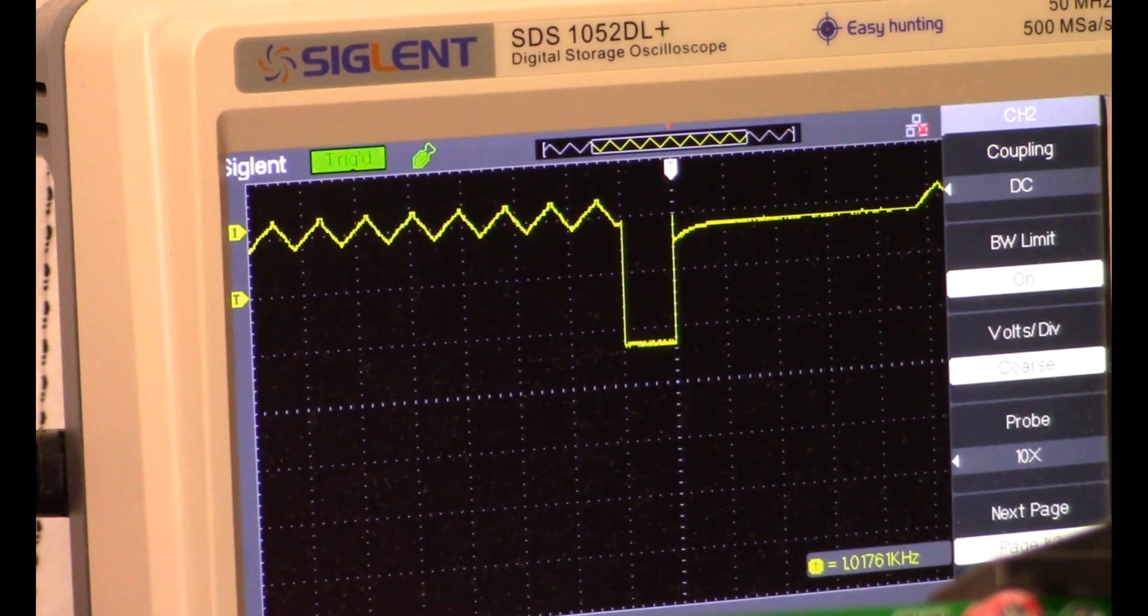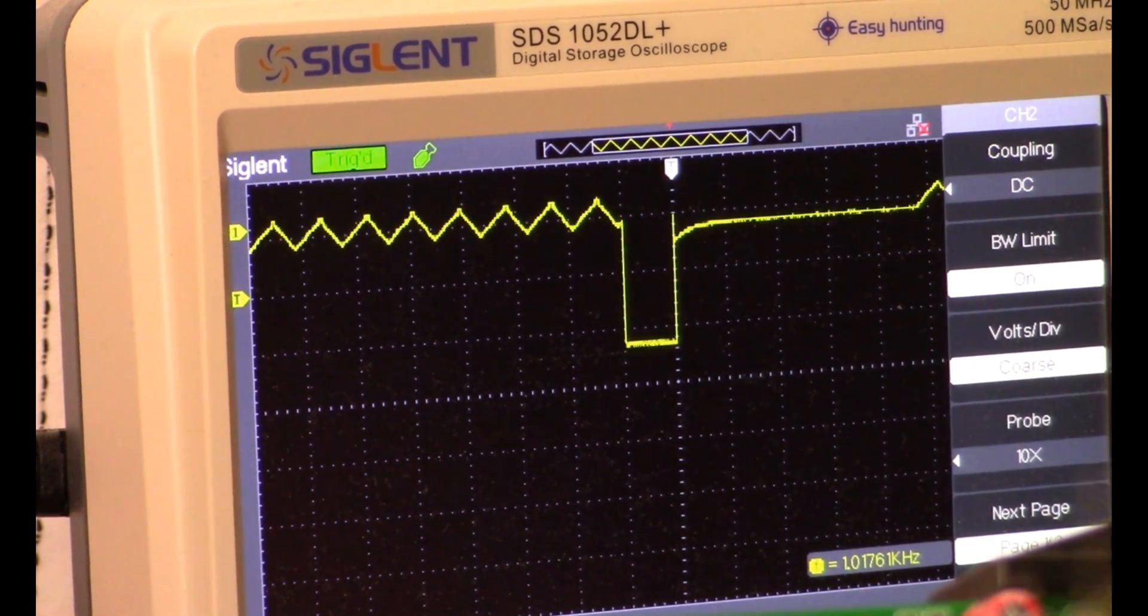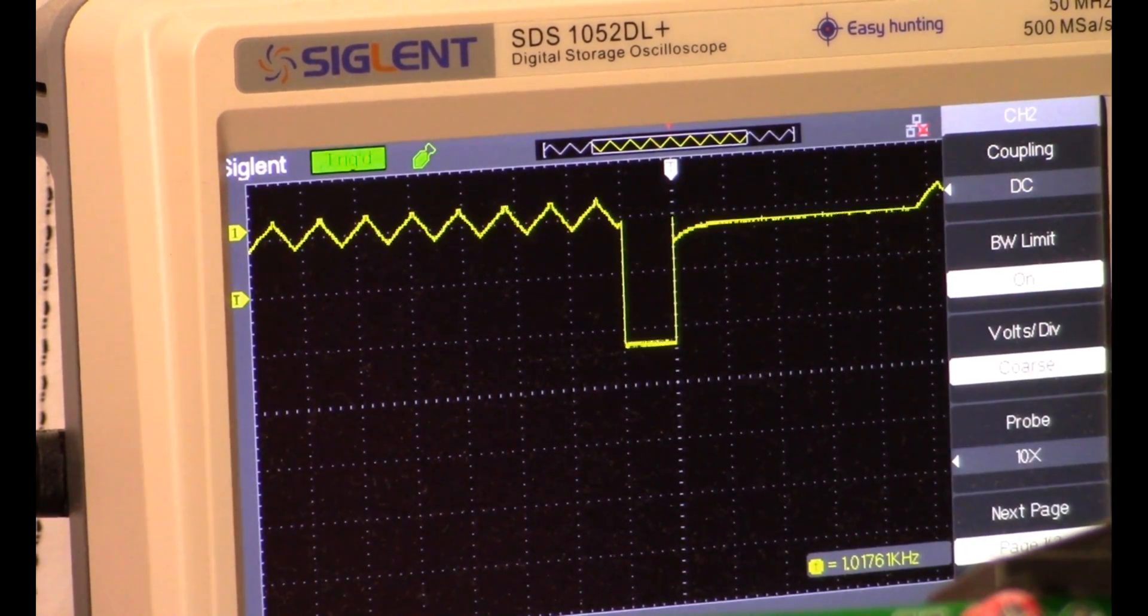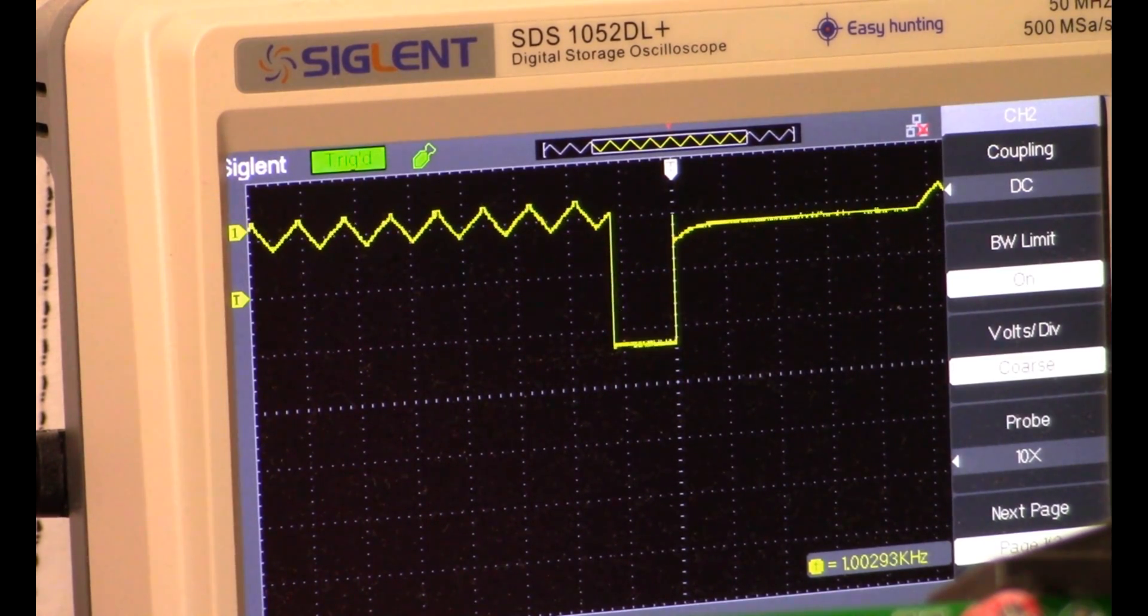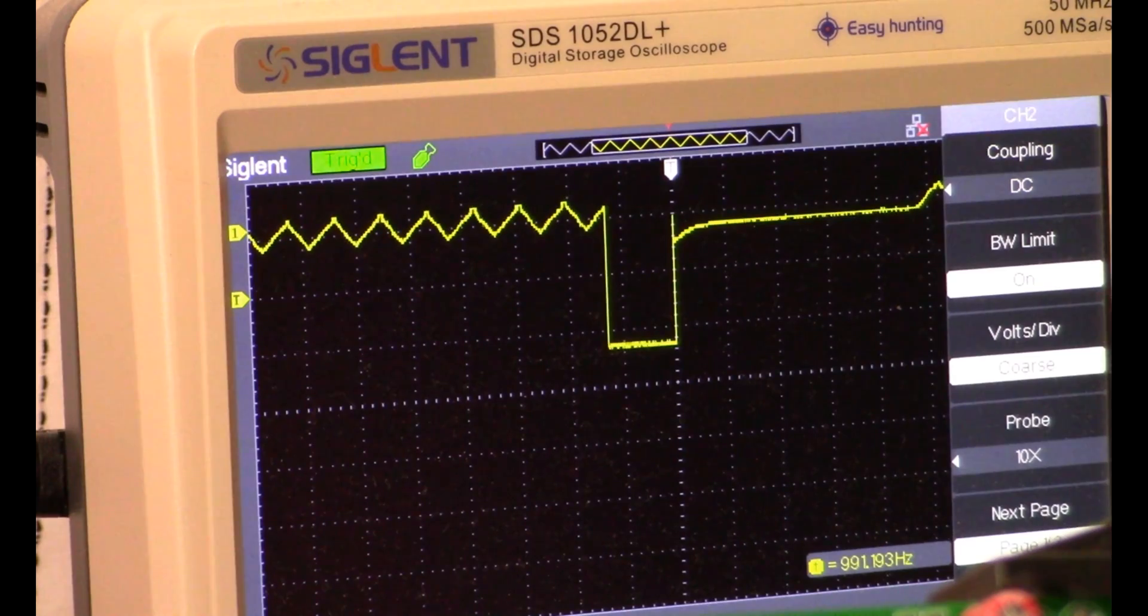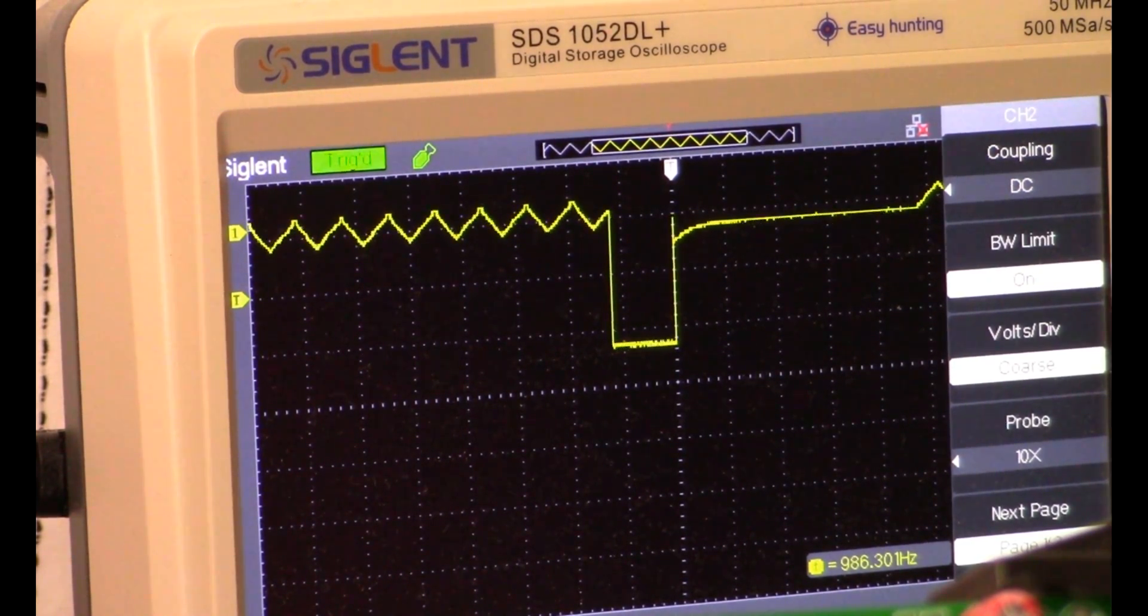I'll go ahead and adjust that and hopefully you can see the result on the screen if I can get onto this trimmer here. It's never easy with this little screwdriver. Okay I think you can see that we're increasing our pulse width there, and I'm going to go ahead and take it back to about 50 microseconds.